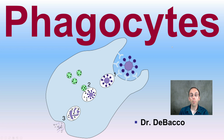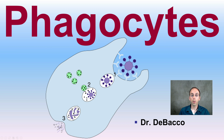Here we're going to be looking at an important component of the immune system called the phagocytes. You can see a general depiction here of a phagocyte and a foreign molecule being bound to, being destroyed, and ultimately excreted as waste particles.